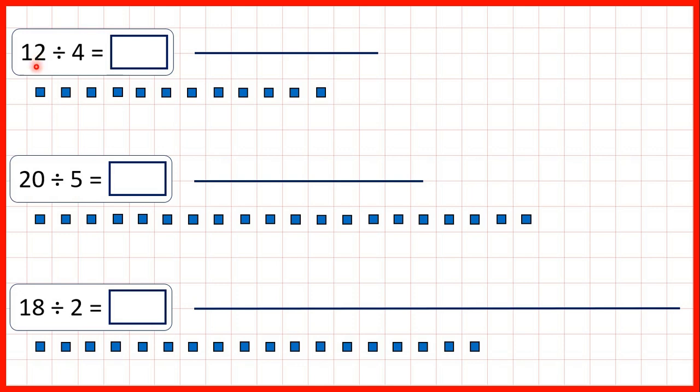So for our first question, we have 12 divided by 4. If we're grouping, what this question means is how many groups of 4 can we make from 12. So here we have 12 counters. We can make one group of 4, a second group of 4, and a third group of 4. So because we can make 3 groups, our answer is 3.